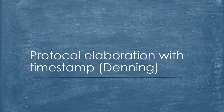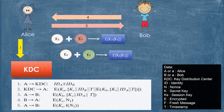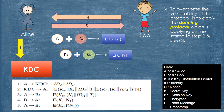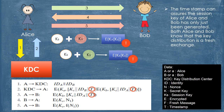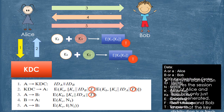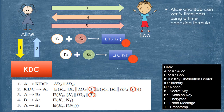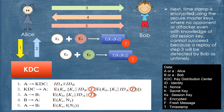Explanation of Needham and Schroeder Using KDC With Timestamp. To overcome the vulnerability of this protocol, the Denning protocol applies a timestamp to Steps 2 and 3. The timestamp assures that the Session Keys of Alice and Bob have only just been generated, and both know that the key distribution is a fresh exchange. Alice and Bob can verify timeliness using a time-checking formula. The timestamp is encrypted using the secure master keys, so no opponent, even with knowledge of an old Session Key, can succeed, because a replay of Step 3 will be detected by Bob as untimely.